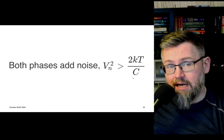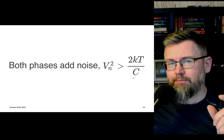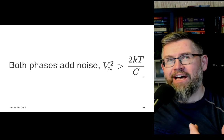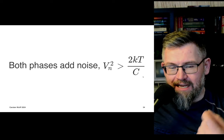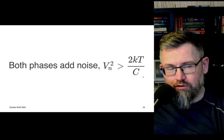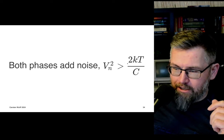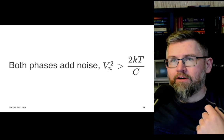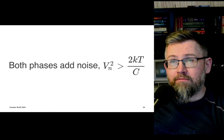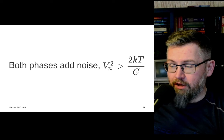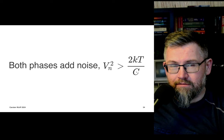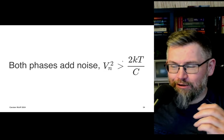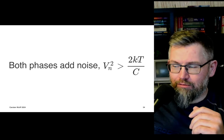In voltage-based ADCs, we sample the input voltage across a capacitor, and that capacitor must be large enough for low noise levels. Making an ADC with 18 bits will consume a lot of power because in the voltage domain you need a very large capacitor. The noise power is proportional to 1/C — to halve the noise power you have to quadruple the capacitance. Both phases in a switch capacitor circuit add noise, so the noise power will always be higher than 2·kT/C.